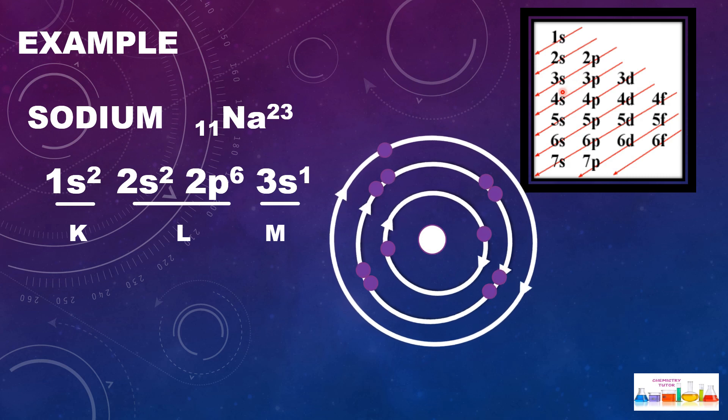If we see this scheme, first we will fill 1s² with two electrons, then 2s² with two electrons, 2p⁶ with six electrons, and then 3s¹ with one electron. Now we will assign the values: 1 is K shell, 2 is L shell, 3 is M shell.